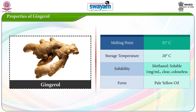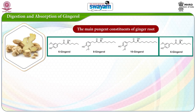Let us see the physical properties of gingerol. The melting point is 31 degrees centigrade, storage temperature is 20 degrees centigrade. In terms of solubility, it is soluble in methanol, and its form is a pale yellow oil.